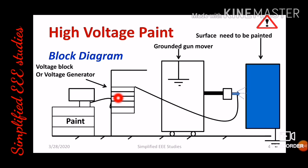The high voltage generator is directly connected to the grounded gun mover, which is a movable part of the high voltage device. Whenever high voltage is applied from the high voltage block to the paint, the paint droplet becomes negatively charged. Because of the high voltage, the paint droplet acquires negative charges, so we can say that the paint droplet has a negative charge. The metal surface which needs to be painted is directly connected to the ground.